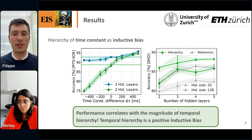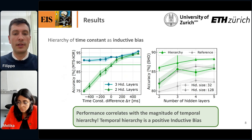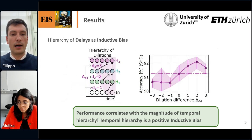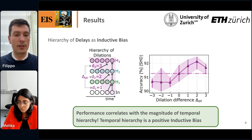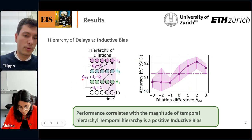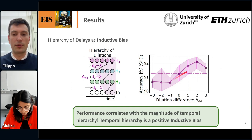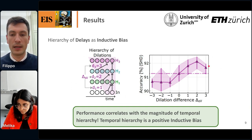This has obvious implications for neuromorphic computing, as you're always looking to reduce the size of networks. I also tested the inductive bias setting with delays — the same story applies. You can play with the dilation of delays or causal convolutions across the layers, and again performance on the SHD task correlates with the dilation difference across layers.